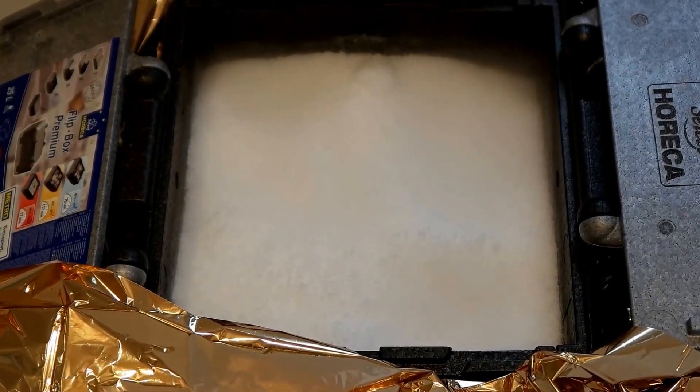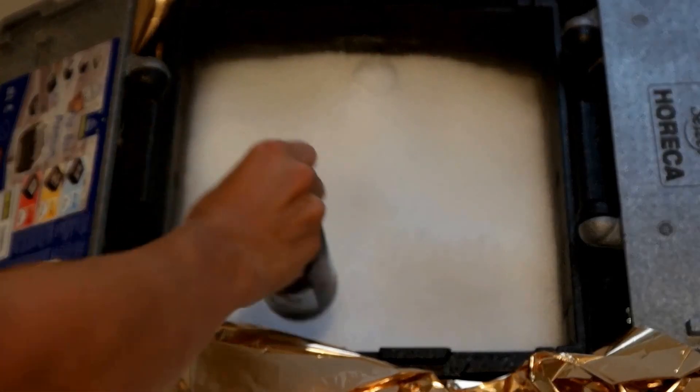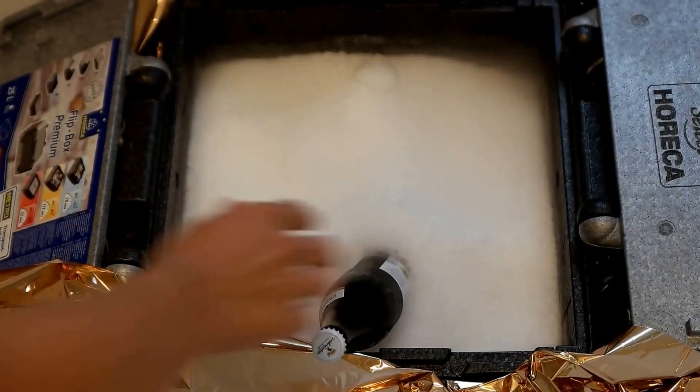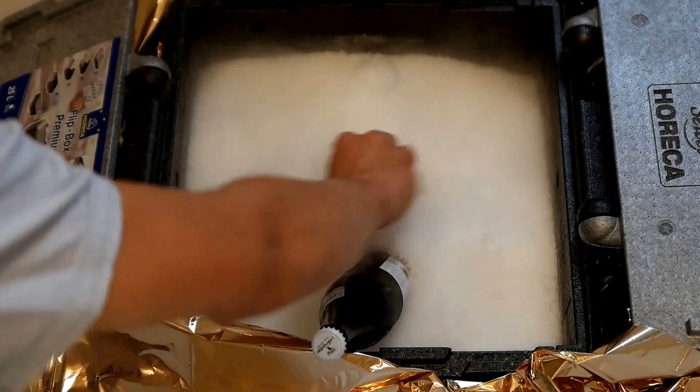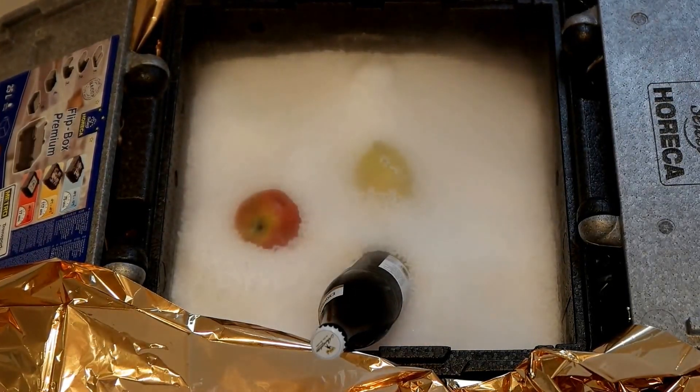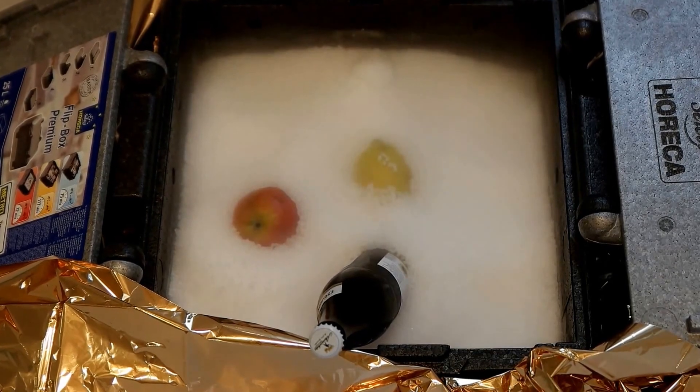Now another cool thing with dry ice is that you can cool your beer or your fruits and even freeze them. So it's perfect for summer to make smoothies or things like that.